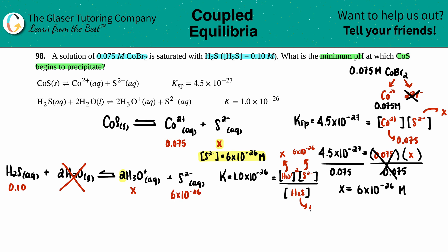So H3O+ is x, S2- is 6 times 10 to the negative 26, and H2S is 0.1. I have 1.0 times 10 to the negative 26 equals x squared times 6 times 10 to the negative 26 divided by 0.1.